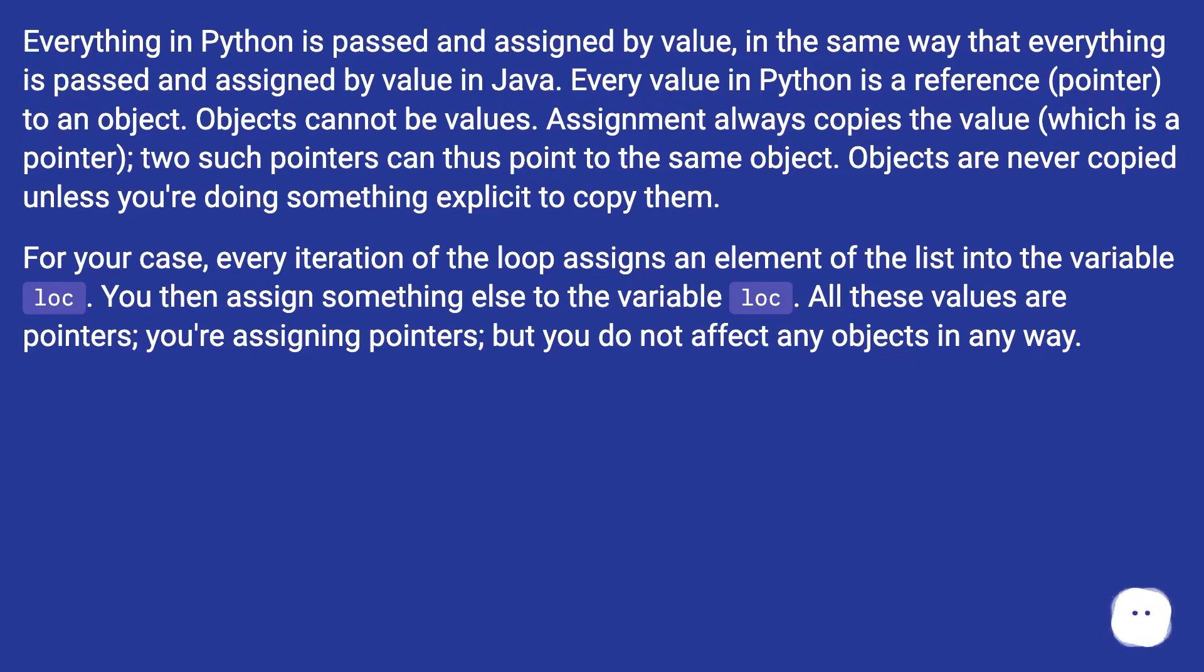For your case, every iteration of the loop assigns an element of the list into the variable loc. You then assign something else to the variable loc. All these values are pointers. You're assigning pointers, but you do not affect any objects in any way.